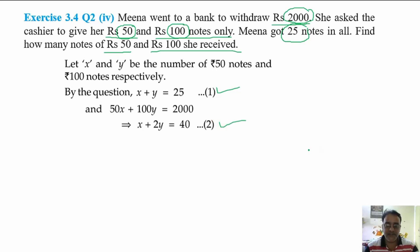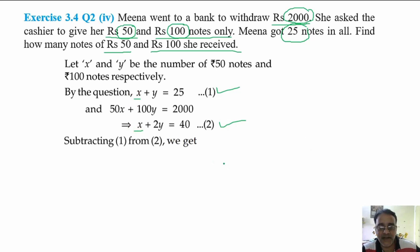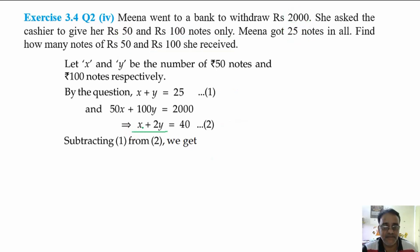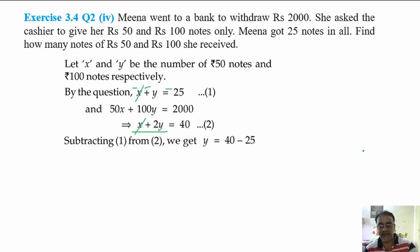Now, any coefficient is the same? Yes, x has the same coefficient and the sign is also the same. So we will subtract. Subtracting equation 1 from equation 2 — note the sign change carefully: minus, minus, minus. The x terms cancel and we get y is equal to 40 minus 25. How much? 15.